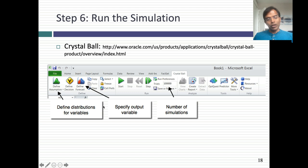You get an additional menu where you can pick the distributions for each of, in this case, revenue growth and margins. You can define your output variable, which in this case is the value per share. You can tell it how many simulations you want to run. In this case, I've run 100,000 simulations. Then I ran the simulation.